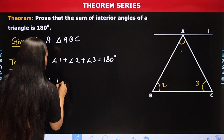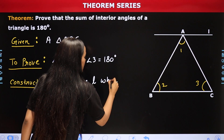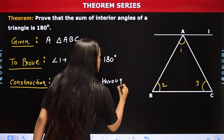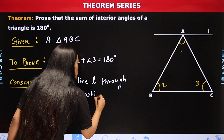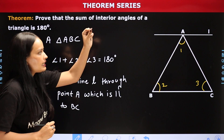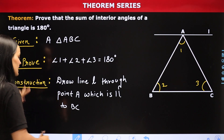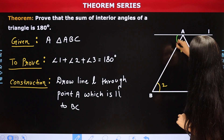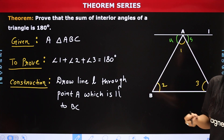Construction में आपने क्या किया? Draw a line L through point A, which is parallel to BC। आपने point A से एक line L निकाली जो BC से parallel है। Construction कर दिया। इससे हमको यह मज़ा आ गया कि कुछ नए angles नजर आ रहे हैं — यहाँ पे angle 4 और यहाँ पे angle 5 नजर आया। हमने इनको नाम दे दिया।